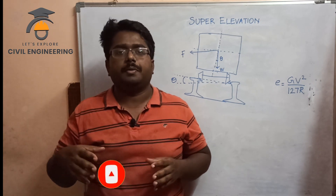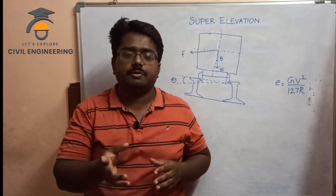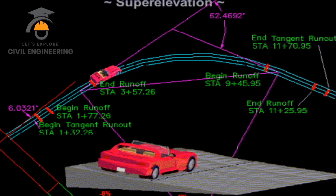On the horizontal curve, if we go in a straight line, we will turn the vehicle a little bit. The force acting is a centrifugal force, which tends to make the vehicle go straight.